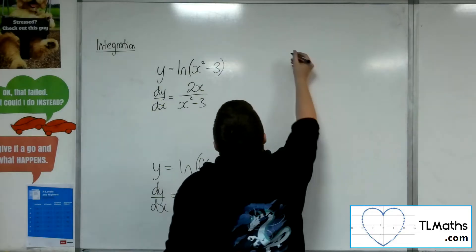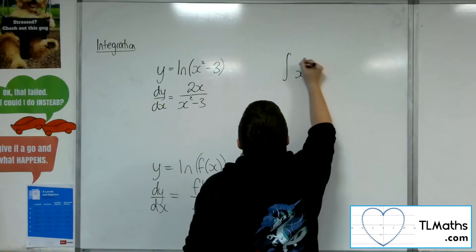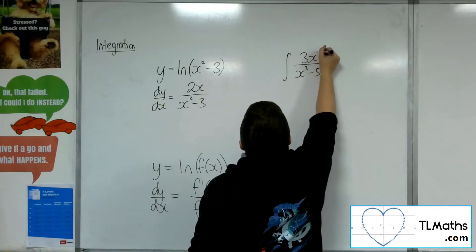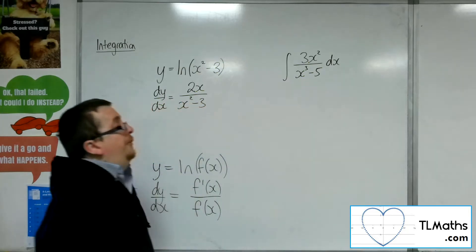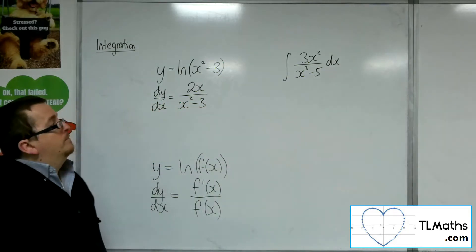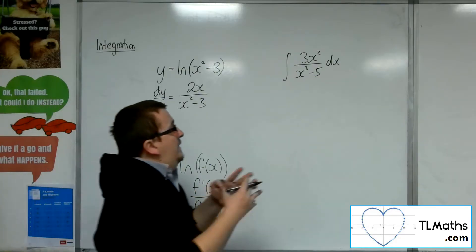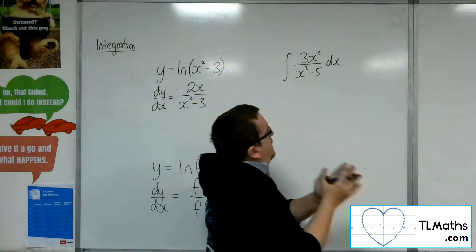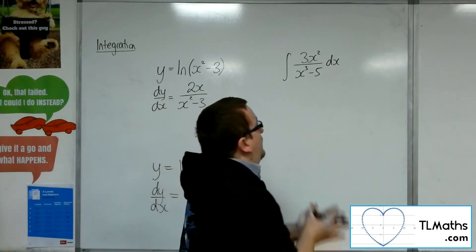So if I had the integral of 3x squared over x cubed minus 5, then what I need to think about and look for is, is the derivative of the denominator in the numerator, which in this case it is.